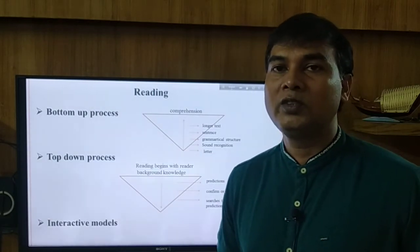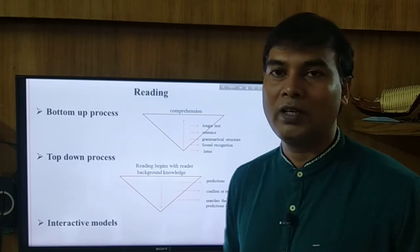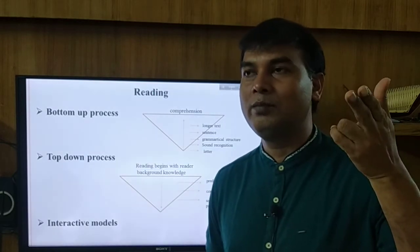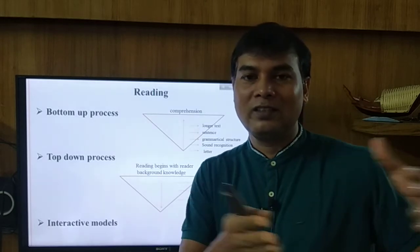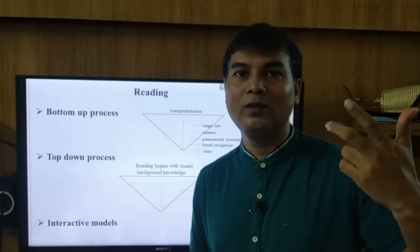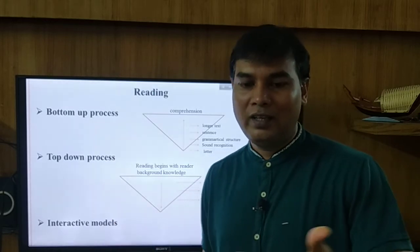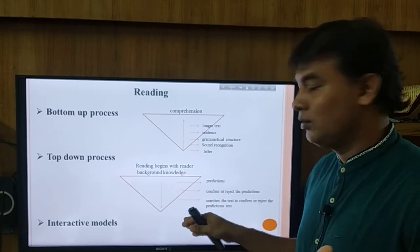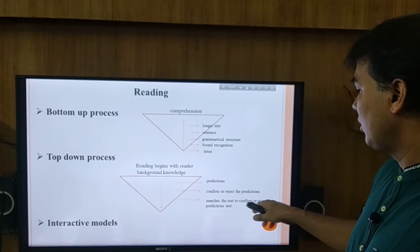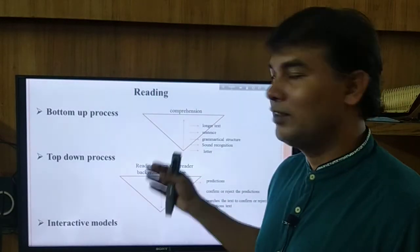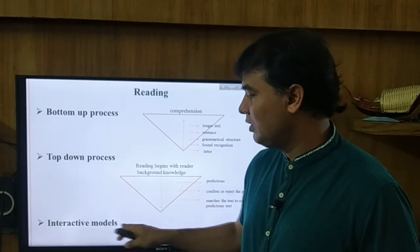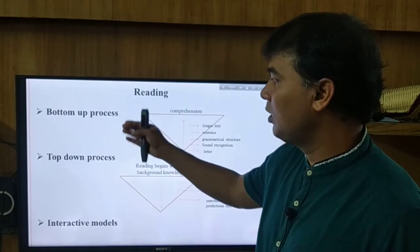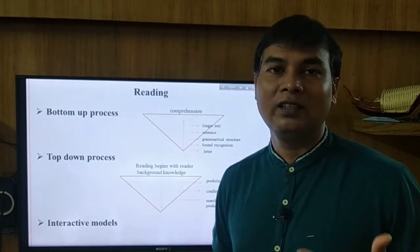For example, suppose a student reads an article from a newspaper about a road accident. In the top-down process, he can use his background knowledge — he might guess what such a road accident might involve. With that background knowledge, he starts reading the article and then confirms whether his prediction is true or not by searching the text. The third model is the interactive model, in which learners of a second or foreign language use both bottom-up and top-down processes together to get the information.